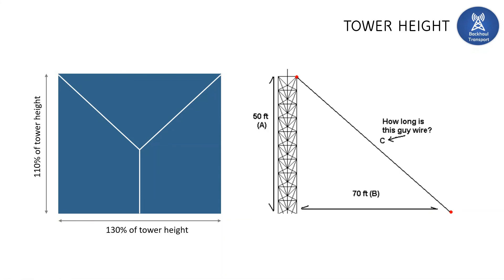Next, we look at tower height. Self-supporting towers are very costly, so guide wires are commonly used to support antenna towers. There are recommended values: the guide wire length should be 130% of the tower height, and the width of the rectangular base should be 110% of the tower height. In stringent cases, 80% of the tower height can also be used. These dimensions can be calculated using the Pythagorean theorem.